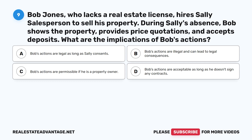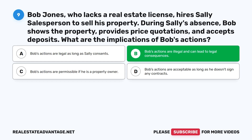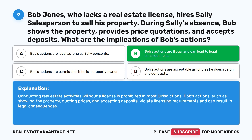Question 9: Bob Jones, who lacks a real estate license, hires Sally's salesperson to sell his property. During Sally's absence, Bob shows the property, provides price quotations, and accepts deposits. What are the implications of Bob's actions? A. Bob's actions are legal as long as Sally consents. B. Bob's actions are illegal and can lead to legal consequences. C. Bob's actions are permissible if he is a property owner. D. Bob's actions are acceptable as long as he doesn't sign any contracts. The correct answer is B: Bob's actions are illegal and can lead to legal consequences. Conducting real estate activities without a license is prohibited in most jurisdictions.